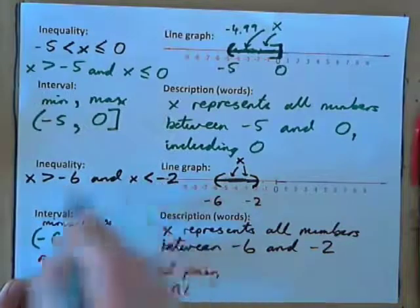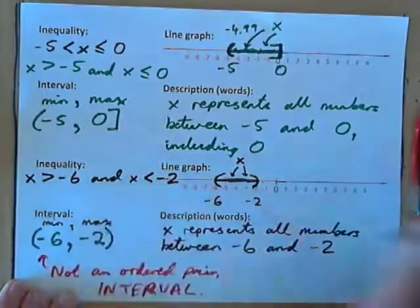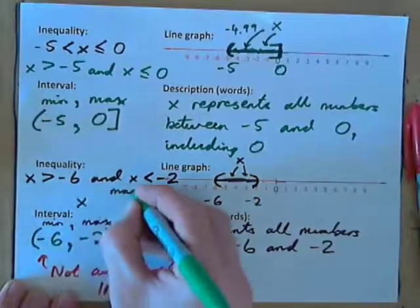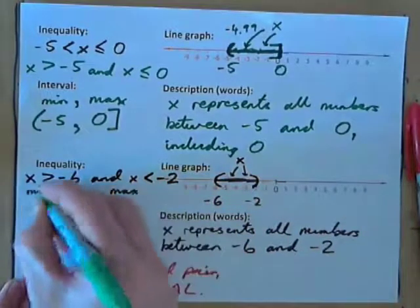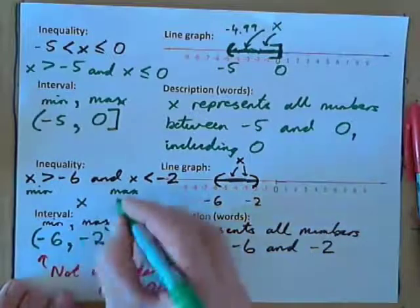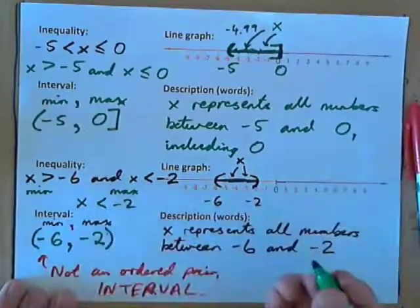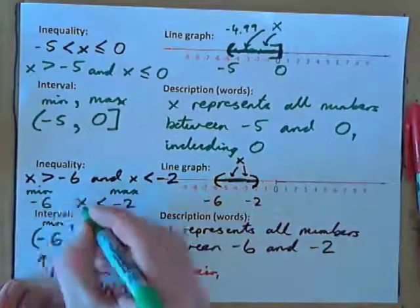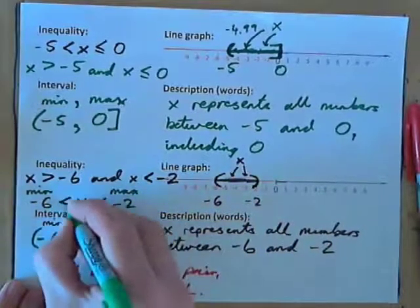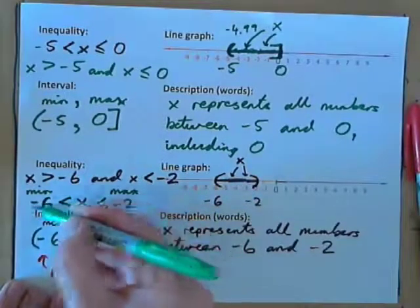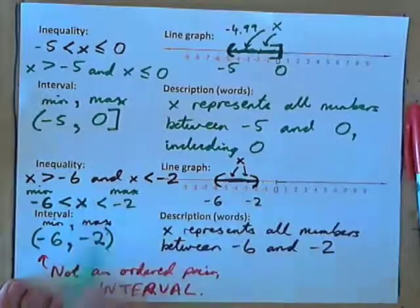Can you change that into a compound inequality? Yes — you need to put x in the middle, the maximum on one side, the minimum on the other. Which number is bigger? Negative 2. So x is less than negative 2. Which number is lesser? Negative 6. So x is greater than negative 6. Reading together: negative 6 < x < negative 2.